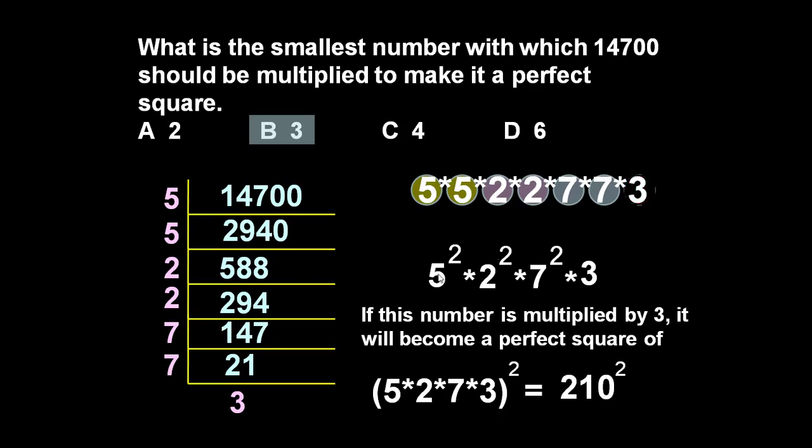Friends, in examination you need not do this much calculation. Just find out the various pairs: 5 into 5, another pair 2 into 2, another pair 7 into 7. But 3 is single, so to make it in a pair, it must be multiplied by 3. So directly we can write the answer as 3.